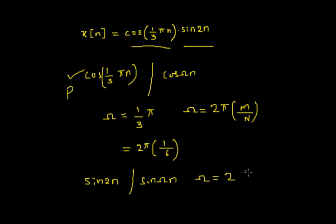The product of these two is x of n. The first signal is periodic and the second signal is aperiodic. The product of a periodic and an aperiodic signal results in a non-periodic or aperiodic signal. Therefore, the result is an aperiodic signal.